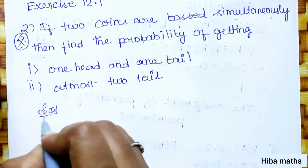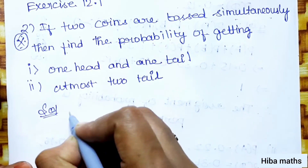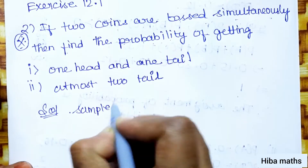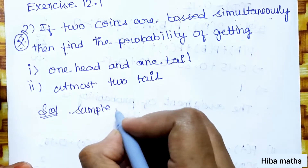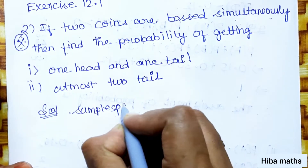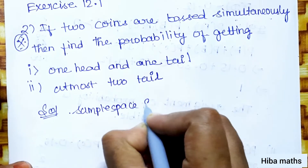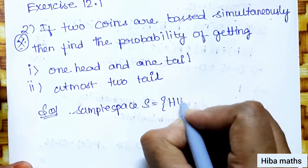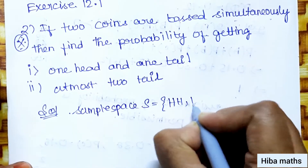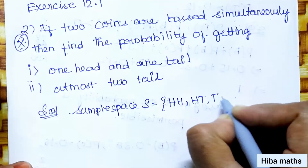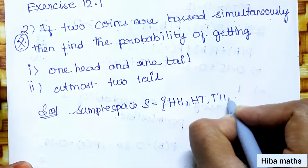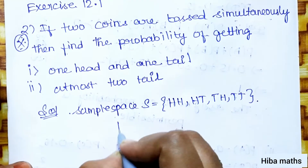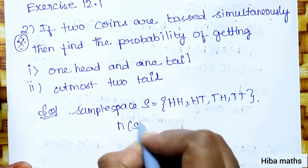So the solution: first, we find the sample space. Two coins are tossed, so the sample space is: two heads (HH), one head one tail (HT), one tail one head (TH), two tails (TT). The total number of outcomes in the sample space is four.